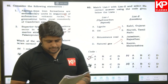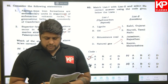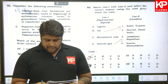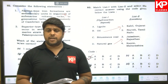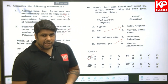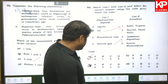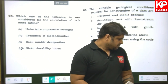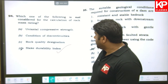Question ninety-five: which is not considered in calculation of rock mass rating? In RMR there are six parameters, but slake durability index is not one of them. So that is the right answer.